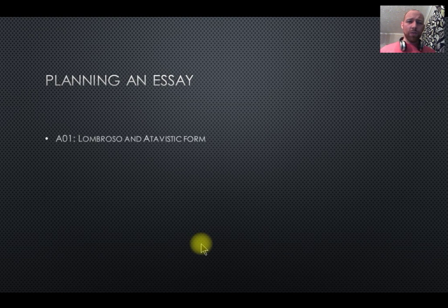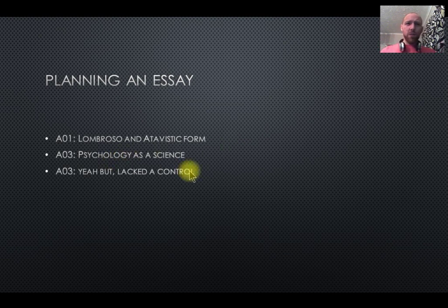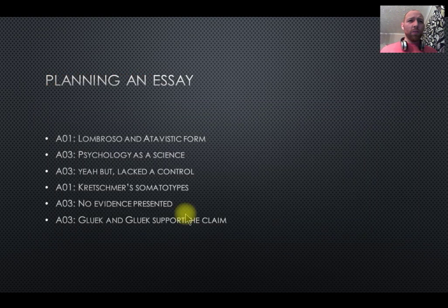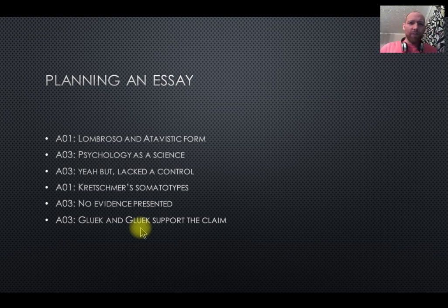That's us more or less done. For a basic essay structure — structured in a 16-mark style — the plan would be: paragraph 1, Lombroso and the atavistic form; paragraph 2, a compound evaluation point; paragraph 3, Kretschmer's somatotypes; paragraph 4, evaluation. That pattern of AO1, evaluation, AO1, evaluation works well, as does AO1, AO1, evaluation. I would always recommend finishing with a compound evaluation involving determinism and reductionism — early evaluations should be very specific, then move out to more general criticism of the field and approach.